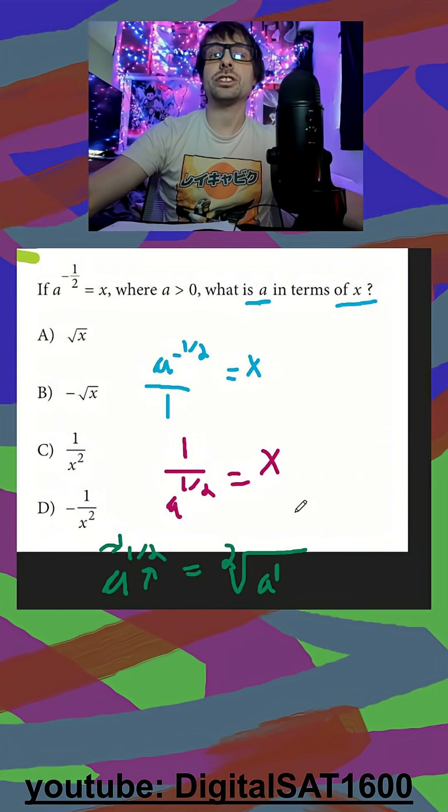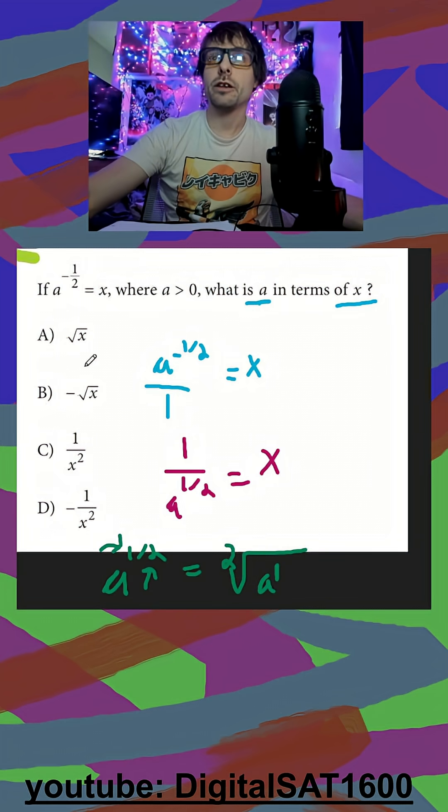So radicals are actually automatically a two here. So if you ever see a radical that doesn't have a number, that is a two, it's inferred. So all we have to do is change this into one over square root of a is equal to x over one.